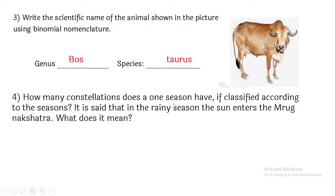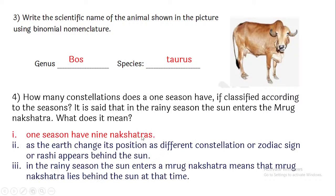How many constellations does one season have? One season has nine nakshatras, that is, nine constellations. It is said that in the rainy season, the sun enters the Mruabh nakshatra. This means that as the Earth changes its position, different constellations or zodiac signs (rashi) appear behind the sun. So in the rainy season, the sun entering the Mruabh nakshatra means that the Mruabh nakshatra lies behind the sun at that time.